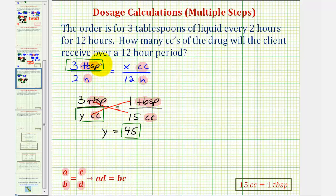Now we can substitute forty-five cc's for three tablespoons in the original proportion. So we would have forty-five cc's to two hours must equal x cc's to twelve hours. Because we have the same units on top and the same units on the bottom, we can cross multiply and solve for x, which will tell us the number of cc's over the twelve hour period.